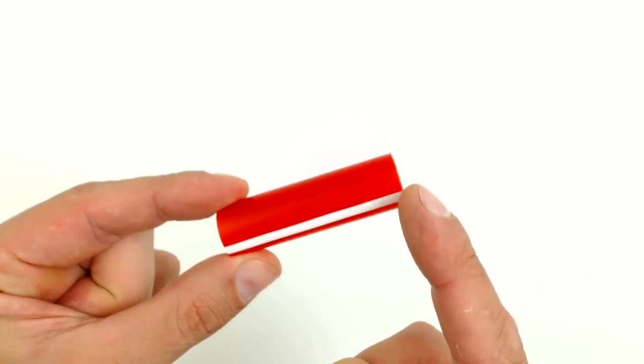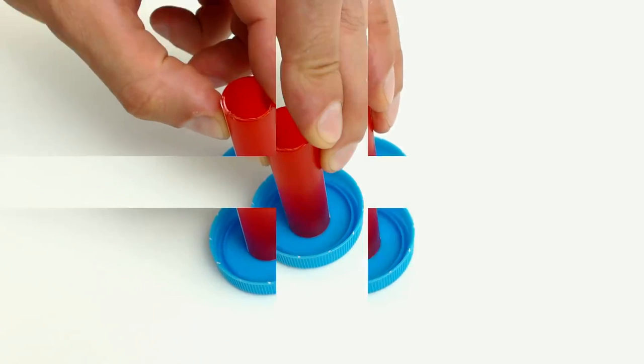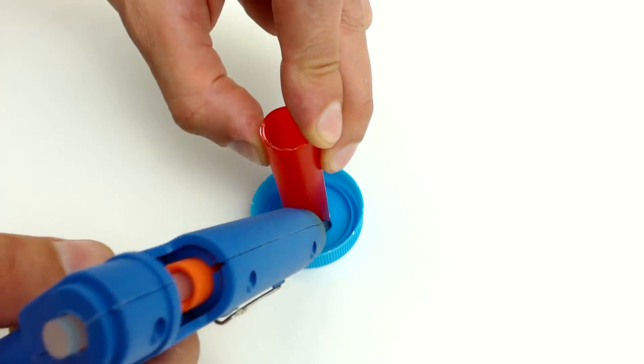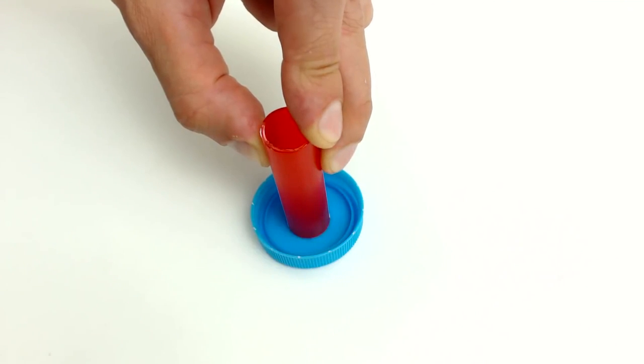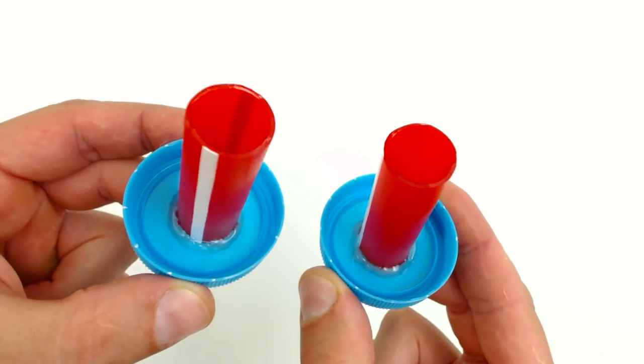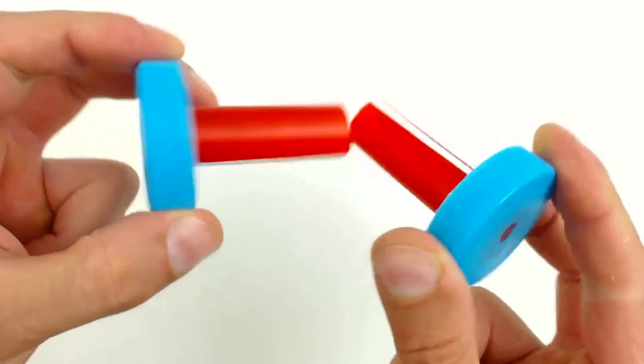You should end up with something like this. Now you can glue the flattened part of the tube on the inside of the cap as shown in the video. Once it is centered, apply silicone all around the joint. Repeat the same procedure on the other cap. This is how they should look like, with the tubes on the inside.